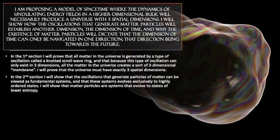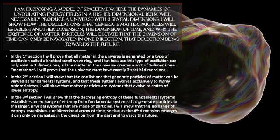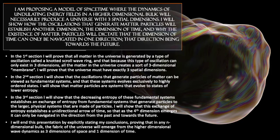In the next section, I'm going to show that the oscillations that generate matter particles can be viewed as fundamental systems, and that these systems evolve exclusively to highly ordered states. I'm going to show that matter particles are systems that evolve to states of lower entropy. In the third section, I will show that the decreasing entropy of these fundamental systems establishes an exchange of entropy — from fundamental systems that generate particles to the larger physical systems that are made of particles. I will show that this exchange of entropy establishes a unidirectional arrow of time, so that as the fourth dimension emerges, it can only be navigated in the direction from the past and towards the future.